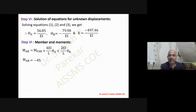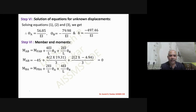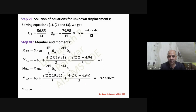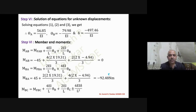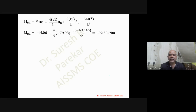Since A is a roller support, M_AB = 0. For M_BA, sway is not relevant for the beam, so substituting θA and θB gives M_BA = minus 92.48 kN·m. For M_BC, θC = 0, substituting gives M_BC = plus 92.05 kN·m.